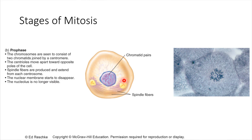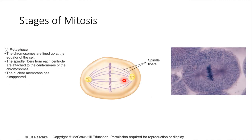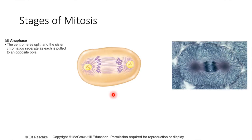Next up we have metaphase. This is where the chromosomes line up in the center. Next comes anaphase, where the sister chromatids get pulled apart from each other.